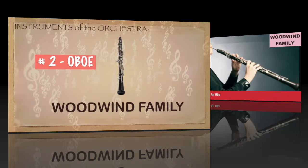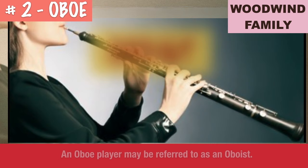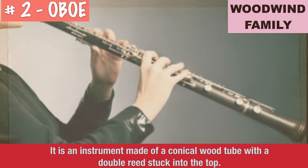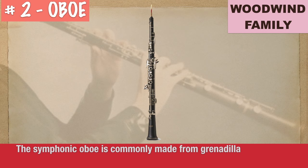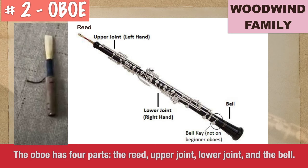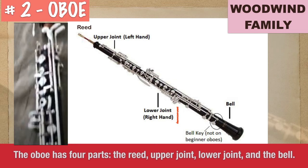An oboe player may be referred to as an oboist. Its name comes from the French word hautbois, which means high wood. It is an instrument made of a conical wood tube with a double reed stuck into the top. The symphonic oboe is commonly made from grenadilla wood, which is also called African blackwood. The oboe has four parts: the reed, upper joint, lower joint, and the bell.